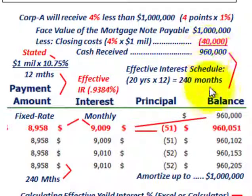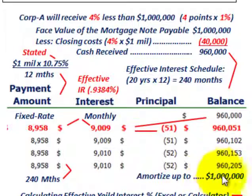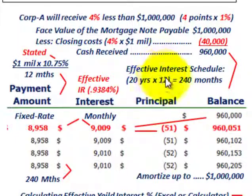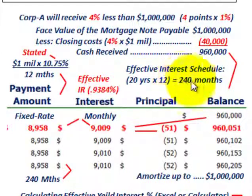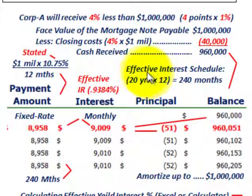We take our $960,000 cash received and amortize it up to the $1 million Corporation A must pay back. We amortize that over 20 years, with payments made on a monthly basis — 20 years times 12 months per year gives us 240 months on this mortgage notes payable. Payments are on a monthly basis for the interest costs, and we'll use the effective interest method for amortizing this note.